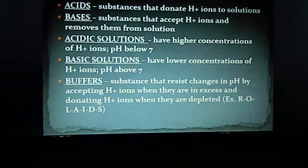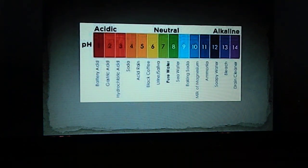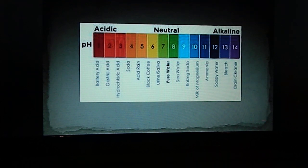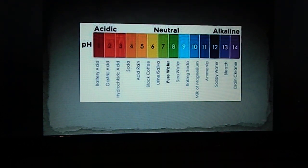Here's the pH scale from 1 to 14. Neutral or pure water is at 7. As you add hydrogen ions, you move toward the acidic side: urine and saliva, then black coffee, then acid rain in the 5 range, carbonic acid in your Coca-Cola, hydrochloric acid in the threes, gastric acid at pH 2, and battery acid at pH 1.